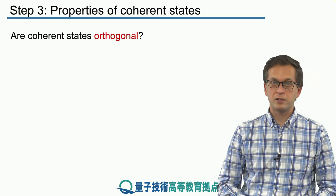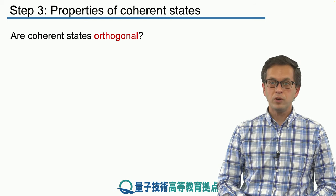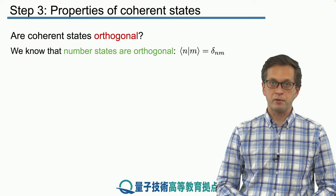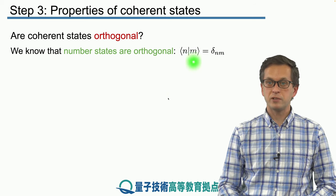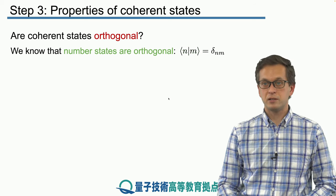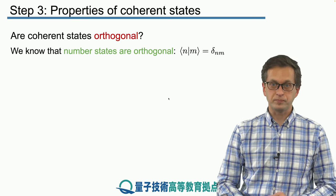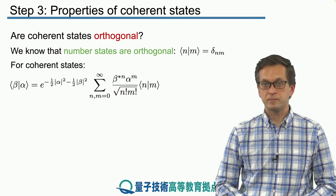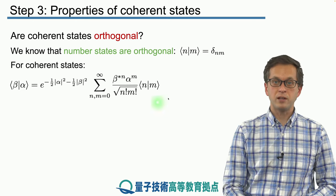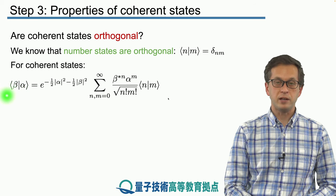One of the first questions that one can ask is: are two different coherent states orthogonal? We know that number states are orthogonal — when you take the inner product between two different number states n and m, you get zero, but if you take the inner product between n and n, you get one. Let's see what's the case for coherent states. We write down the inner product between two different coherent states, alpha and beta.